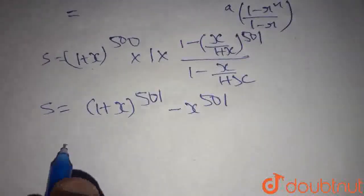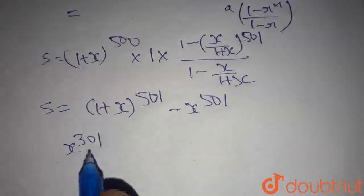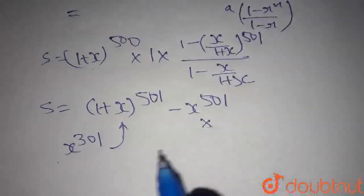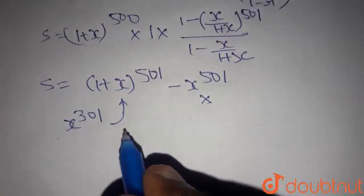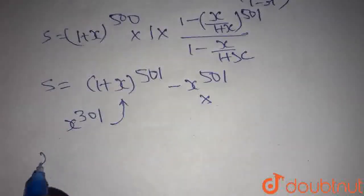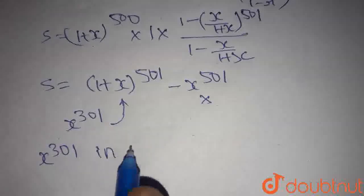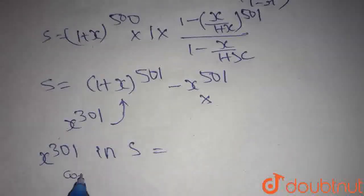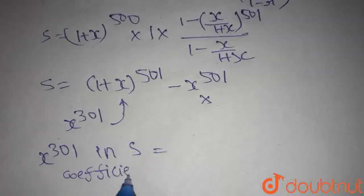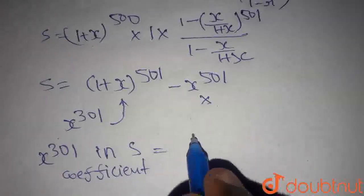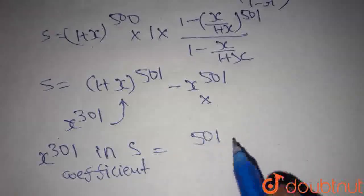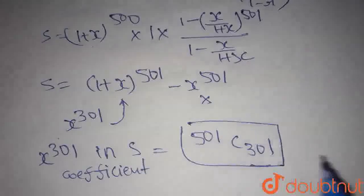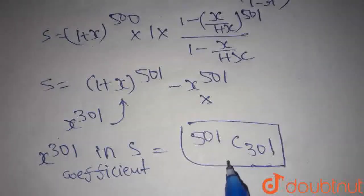The term x to the power 301 lies in this term only — (1 + x) to the power 501 — and not in the x to the power 501 term. So the coefficient of x to the power 301 in s is given by 501C301, using binomial expansion.